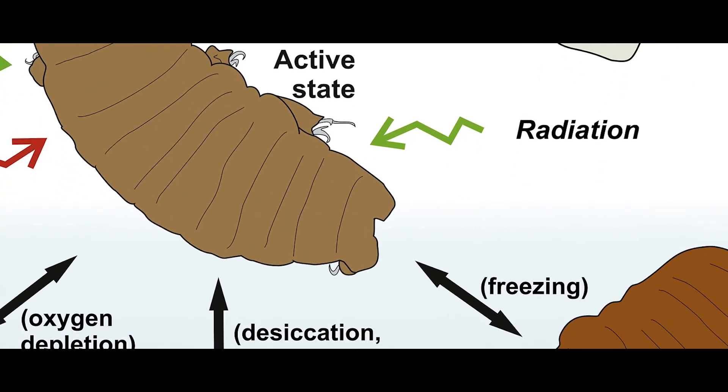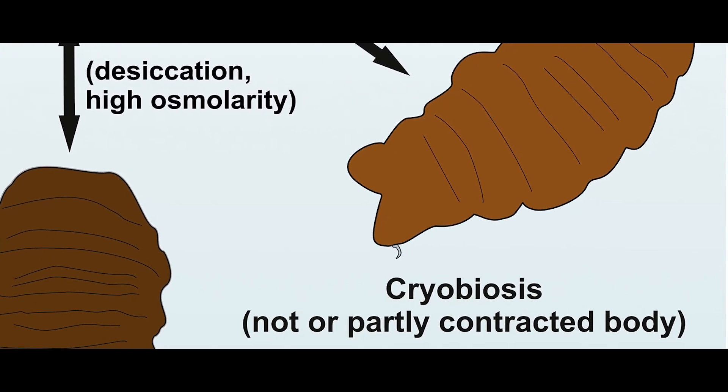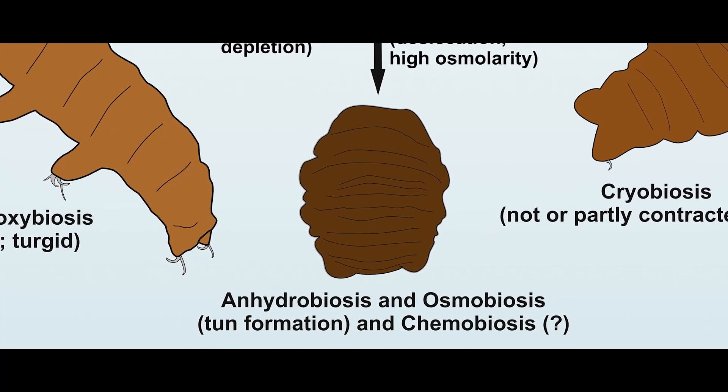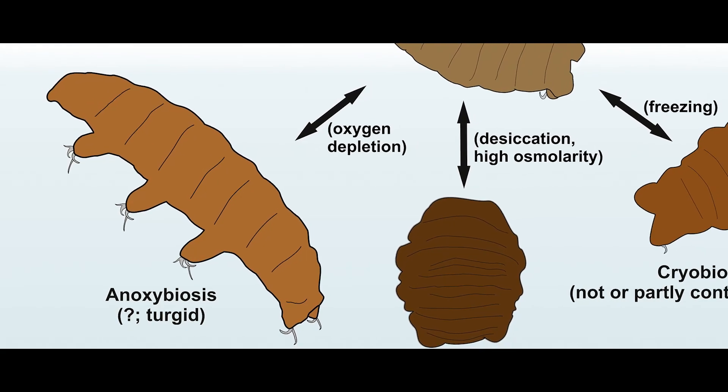When exposed to radiation, they become a cyst within their own skin. When frozen, they simply become a cocoon that is partly restricted. When they dehydrate, they become a super rounded cocoon. When they are without oxygen, they don't shrivel up as much and instead just stop moving and become slightly skinnier.